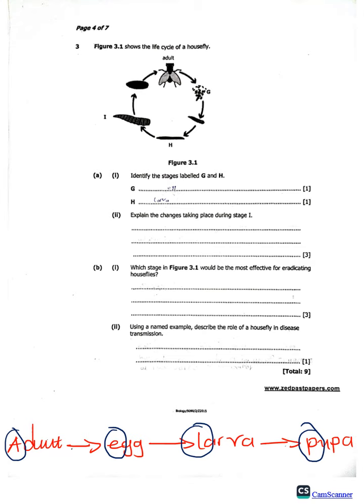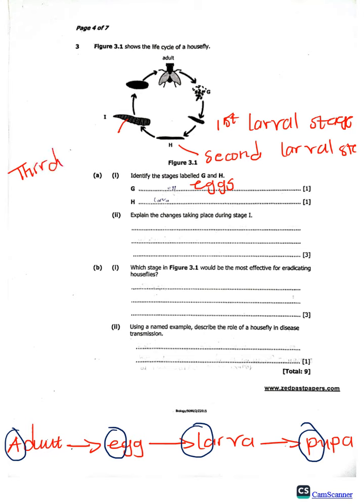Question A roman number one: identify the stages labeled G and H. Since G comes after the adult, G is the egg. The larva is subdivided into three stages: the first larval stage, second larval stage, and third larval stage. So H, which comes after the first larval stage, is the second larval stage.